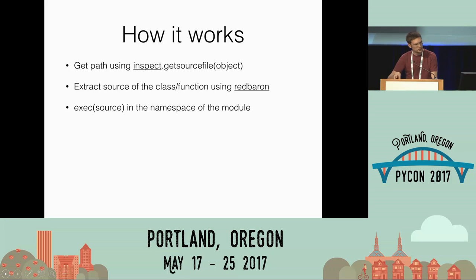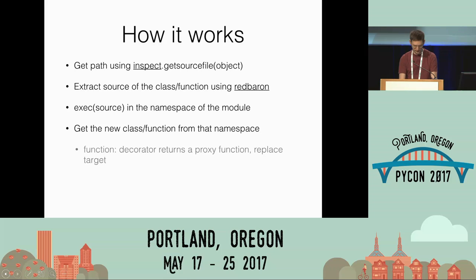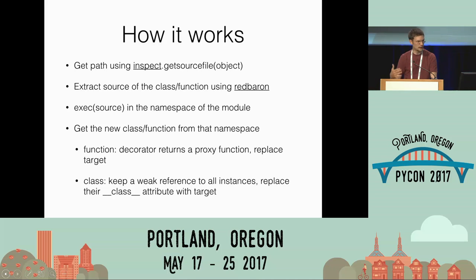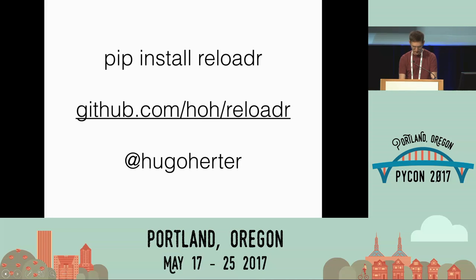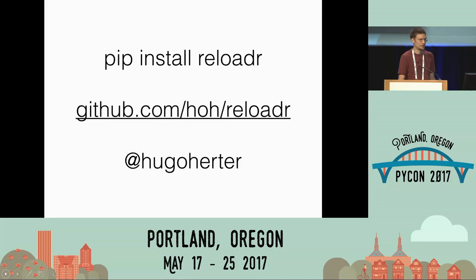It executes that piece of source code inside the namespace of the module, gets the new class from that namespace. If you have a function, the decorator returns a proxy function and replaces the target function, so the proxy now uses the new version. If you have a class, the decorator keeps a weak reference to all instances of your class and replaces the __class__ of all those instances. Because they are weak references, the objects can still be garbage collected. If you want to try it, just pip install reloader, or check the GitHub repository or tweet me if you have comments.